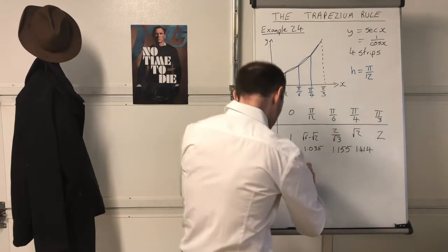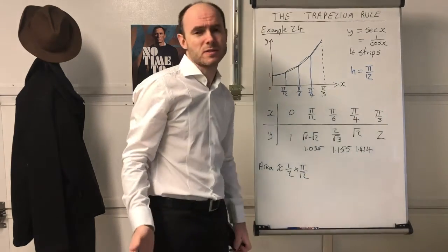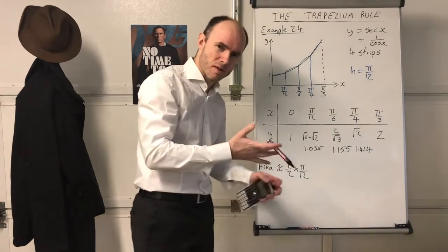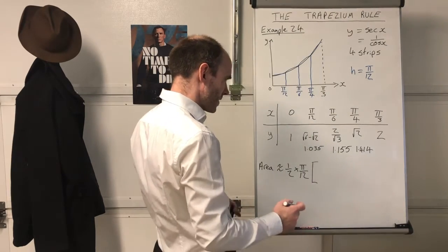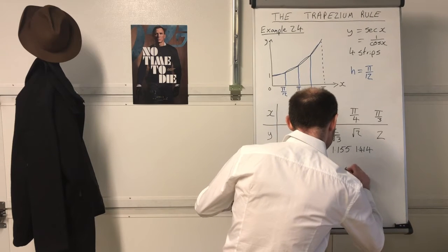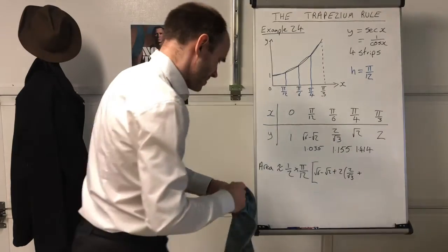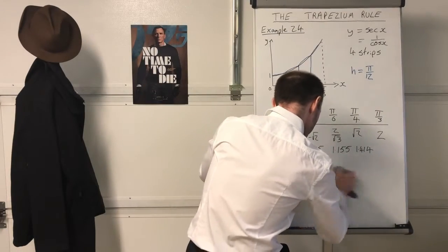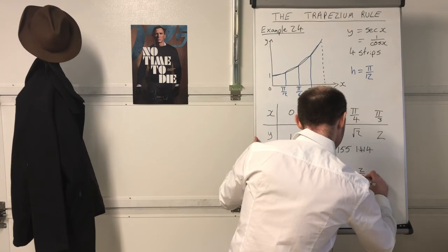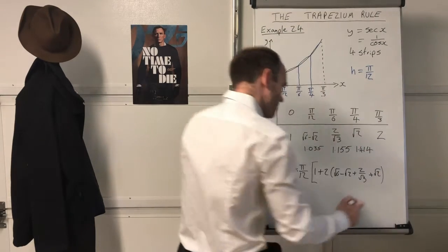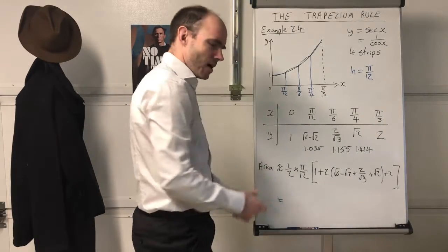Now let's use the formula. Always remember to use the approximation symbol — don't write 'area equals', it's an approximation. The formula is one half of H, so one half of π/12. Make it clear to the examiner you know what H is, as that's a B mark. Then in brackets: the first and last y-values (y₀ and y₄), plus two lots of all interior y-values. So: (√6 − √2) + 2(2/√3) + 2√2, close the bracket, plus 2.